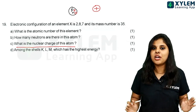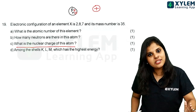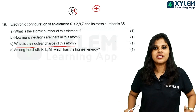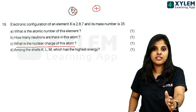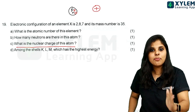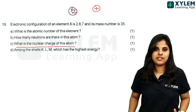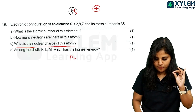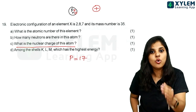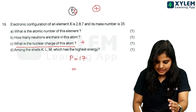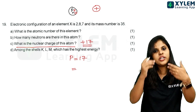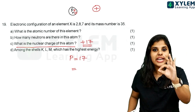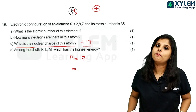Nuclear charge is a very difficult question. Nuclear charge is the nucleus charge — that is from the proton. Because neutron has no charge, proton has positive charge. That is nuclear charge. How many protons are there? There are 17 protons. So we call nuclear charge plus 17.